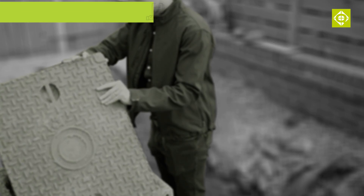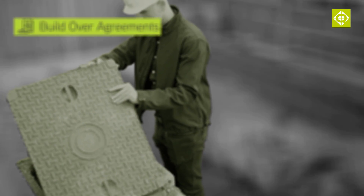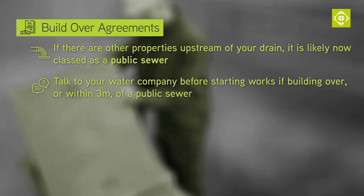If there are any other properties upstream of your drain, then it's likely that this drain is now classed as a public sewer. If building works take place directly over or within three meters of any public sewer, then you should talk to your local water company well before you start the works. Your local water company is just whoever you pay your water rates to.